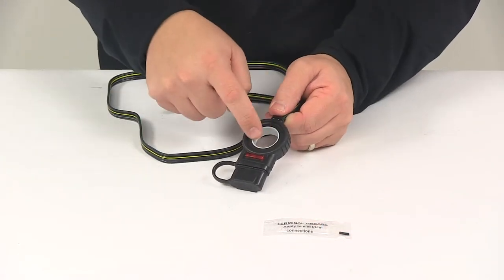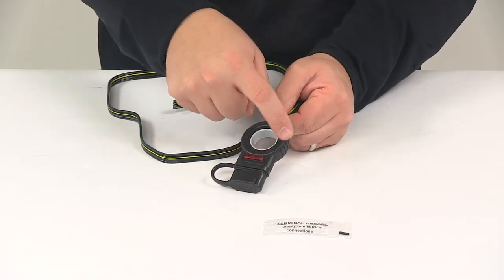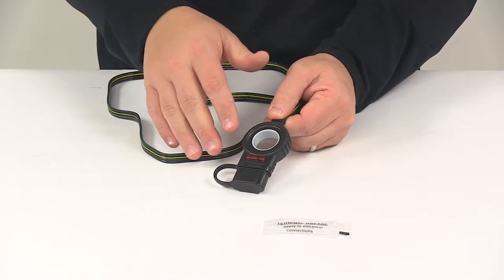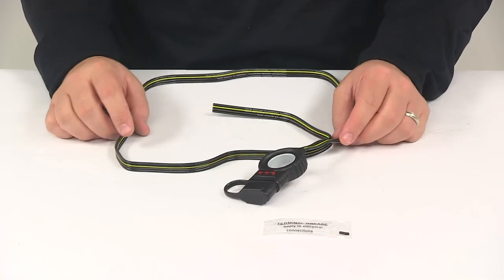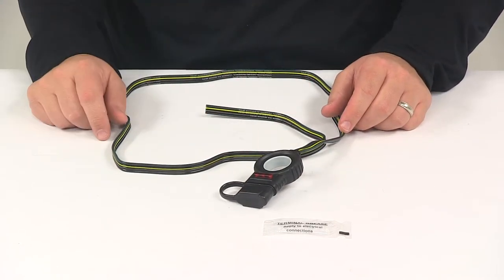The ring diameter is going to be about one inch. The ring outer diameter is about one and seven-eighths of an inch to two inches. Your harness length, the wiring, is going to measure about 48 inches long.